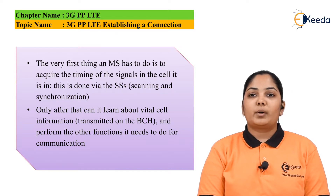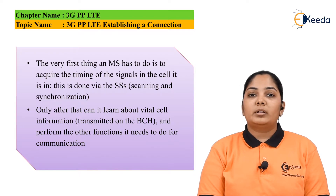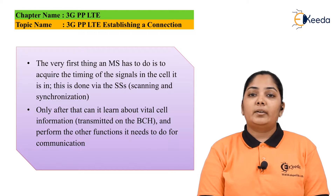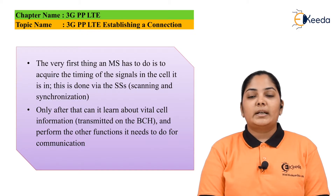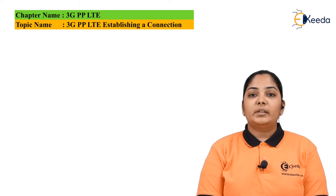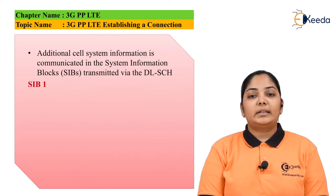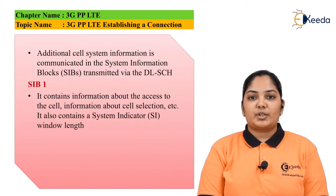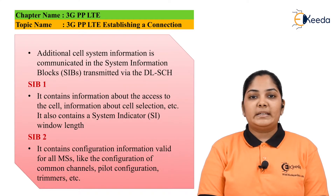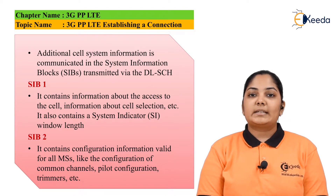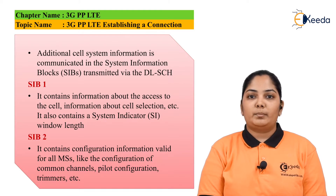The broadcast channel is from the base station to the mobile station, hence all the mobile phones will receive this broadcast information and then perform other functions needed for communication. After the mobile station has acquired the timing information and the reception of the BCH, the broadcast channel, additional cell information is communicated in the system information blocks.